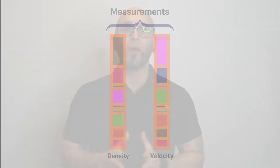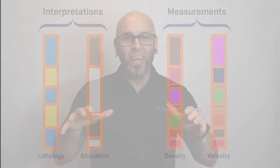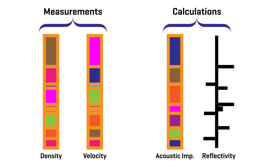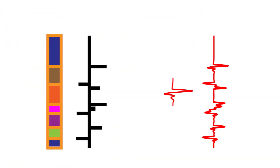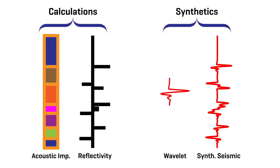We derive two measurements from the core database or the core itself: velocity and density. These two measurements and their connection with rock type and alteration from core interpretation give us a base for synthetic seismic analysis. We use the velocity and density to calculate acoustic impedance, which is related to seismic reflectivity. Once we have the reflectivity, we are able to understand the why and the where seismic reflections will occur in your mining environment. We can come out to your site to do the measurements, but we can also train you how to do them yourself.